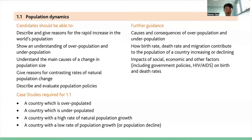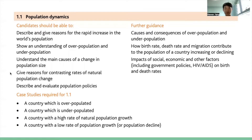So this is the syllabus information. Cambridge International suggests that candidates should be able to describe and give reasons for the rapid increase in the world's population, show an understanding of overpopulation and underpopulation, understand the main causes of a change in population size, give reasons for contrasting rates of natural population change, and describe and evaluate population policies.